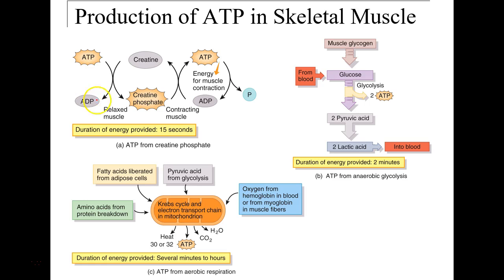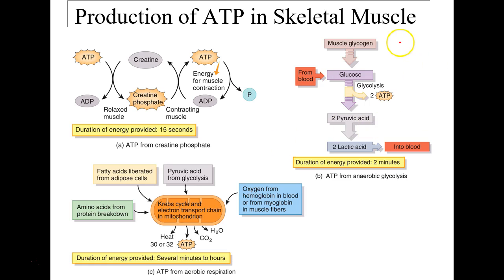With creatine phosphate, we need ADP and creatine. When creatine phosphate reacts, we create ATP. This is the fastest way to produce ATP available to the muscle cell.